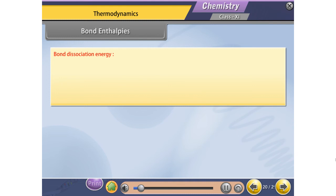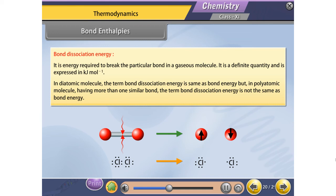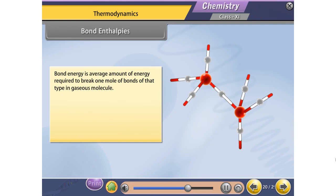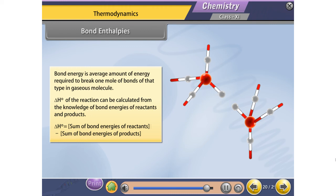Bond dissociation energy is defined as the energy required to break a particular bond in a gaseous molecule. It is expressed in kJ/mol. In a diatomic molecule, bond dissociation energy is the same as bond energy, but in a polyatomic molecule with more than one similar bond, bond dissociation energy is not the same as bond energy. Bond energy is the average amount of energy required to break one mole of bonds of that type in a gaseous molecule. ΔH of reaction can be calculated from the bond energies of reactants and products.